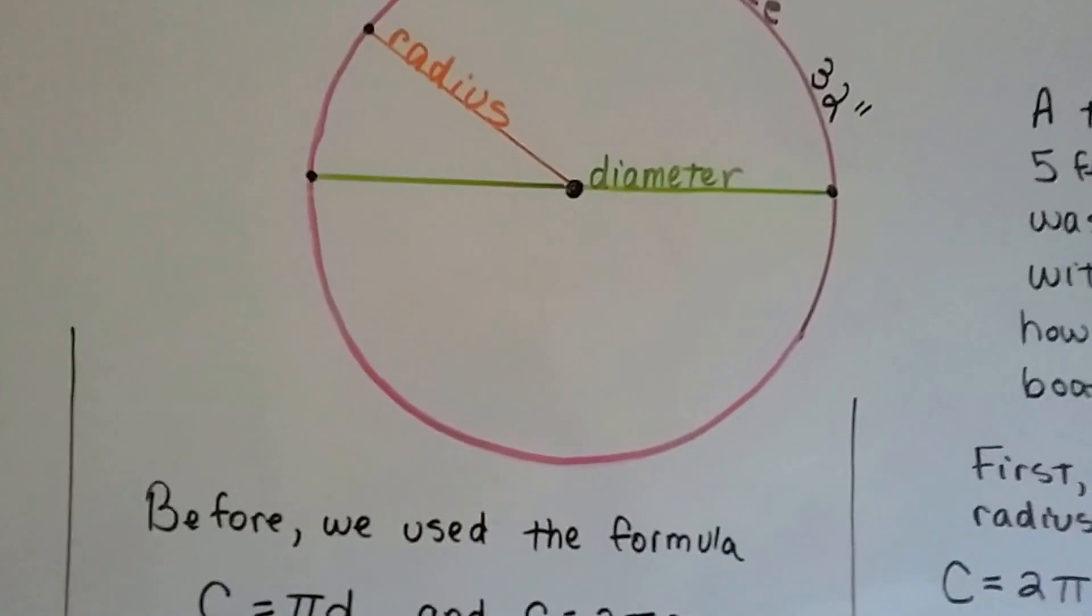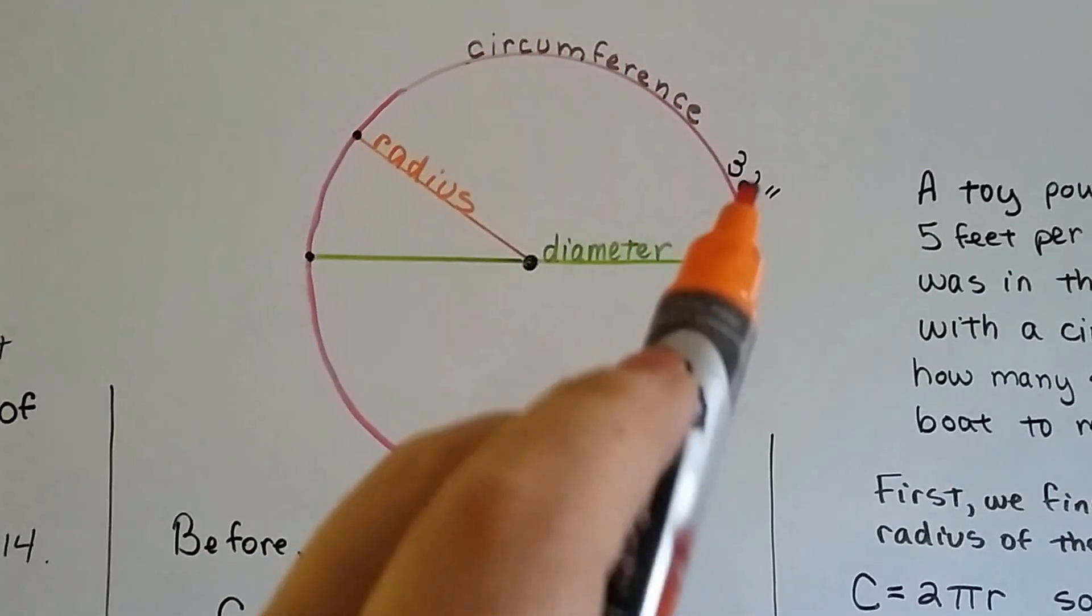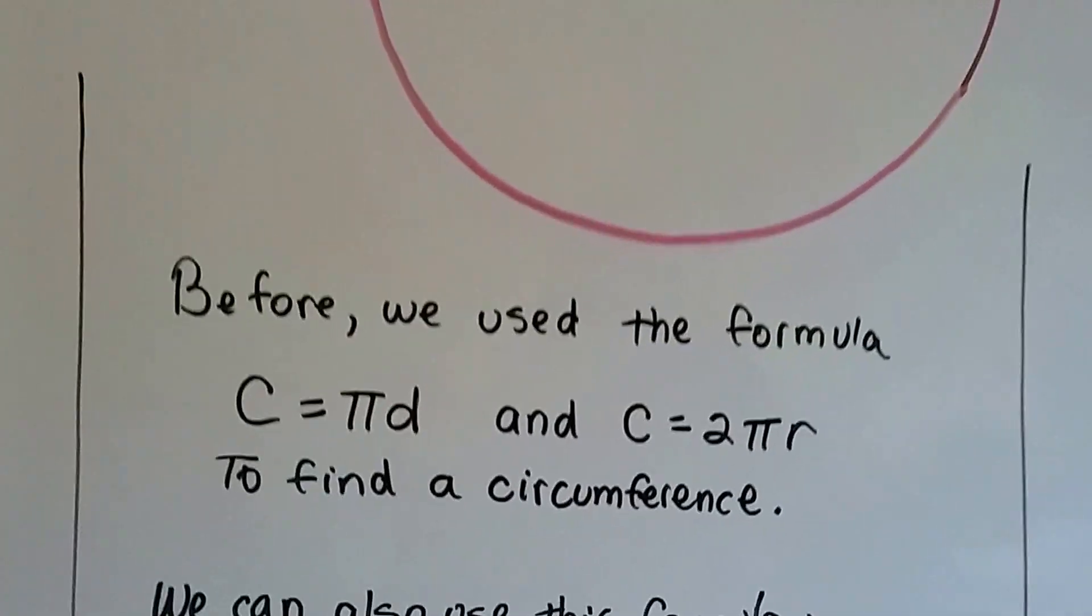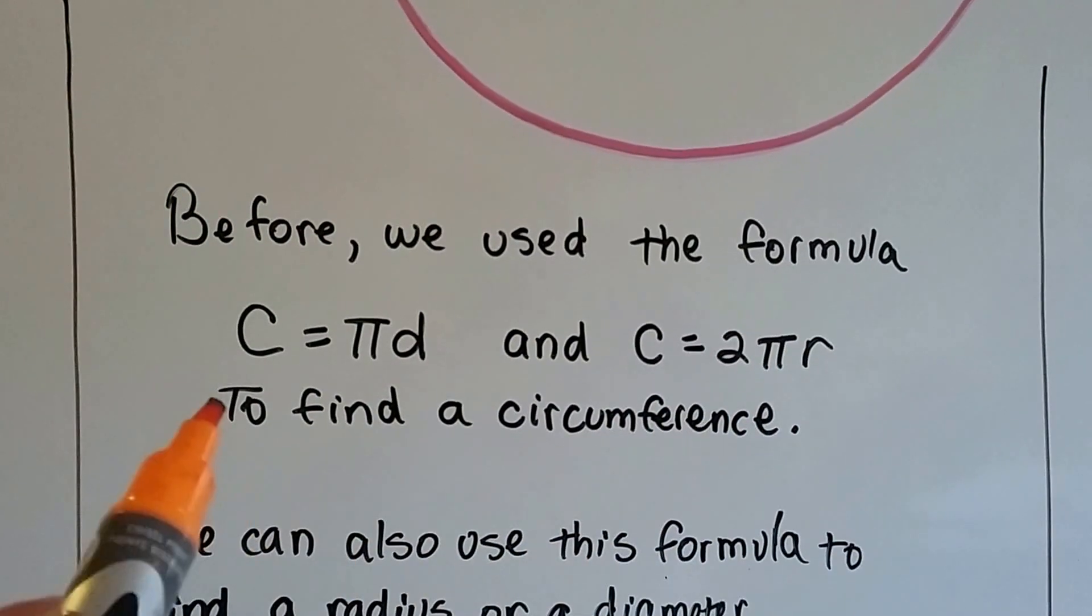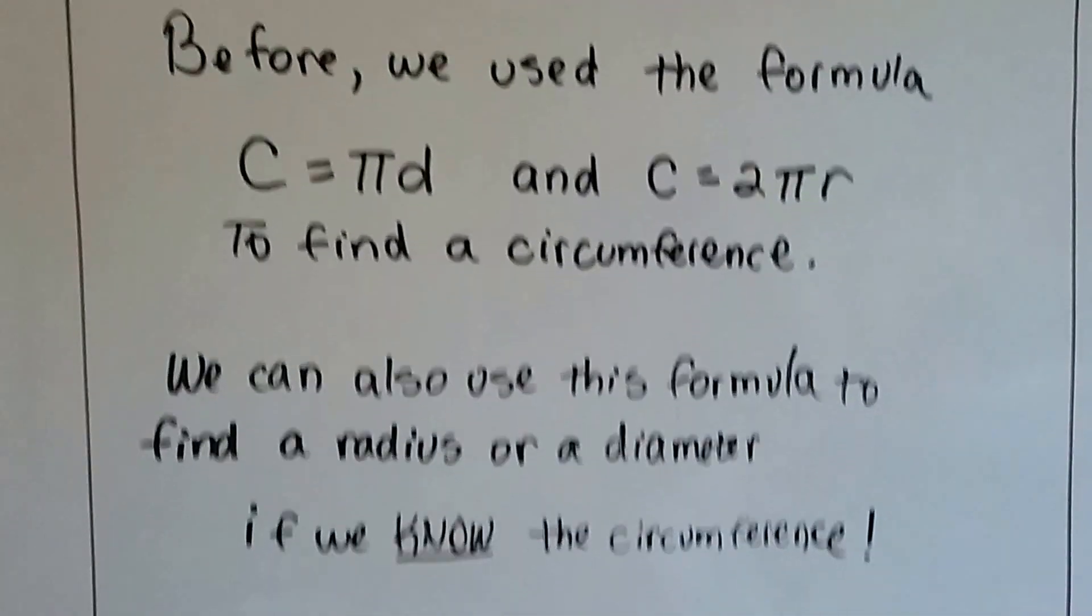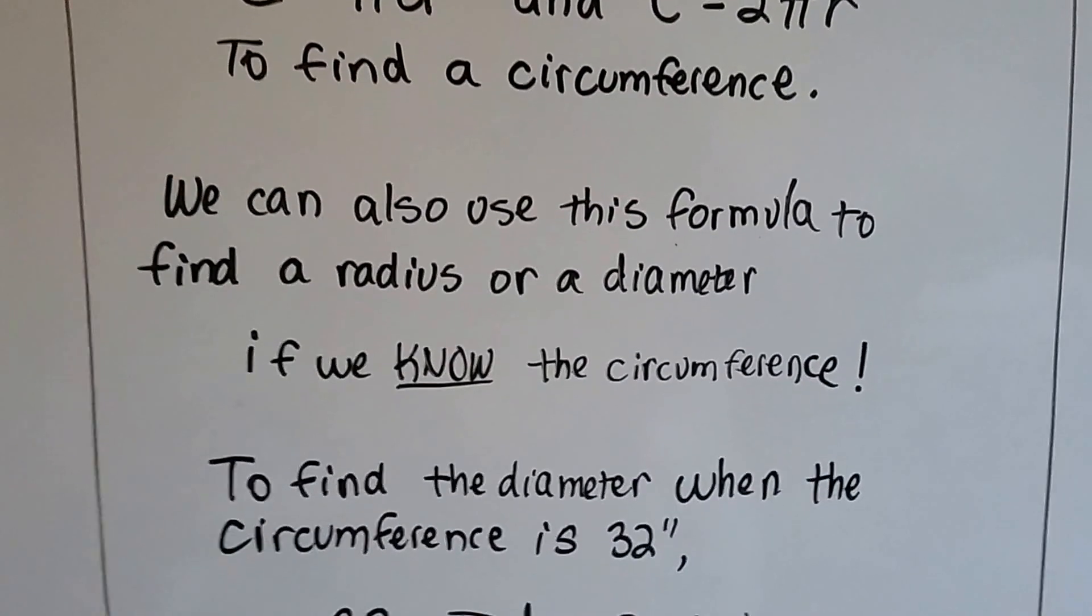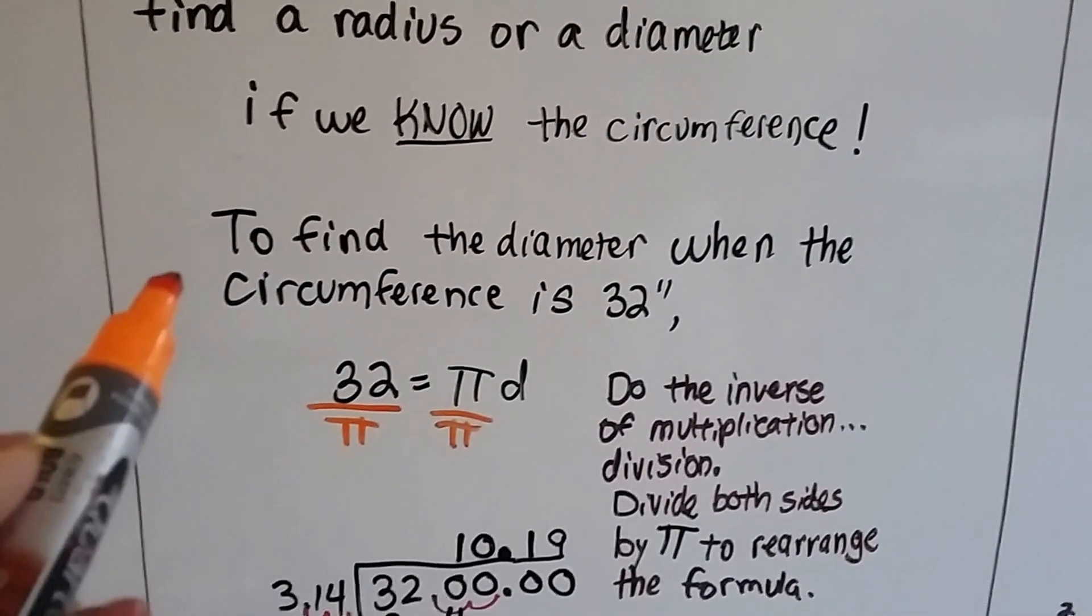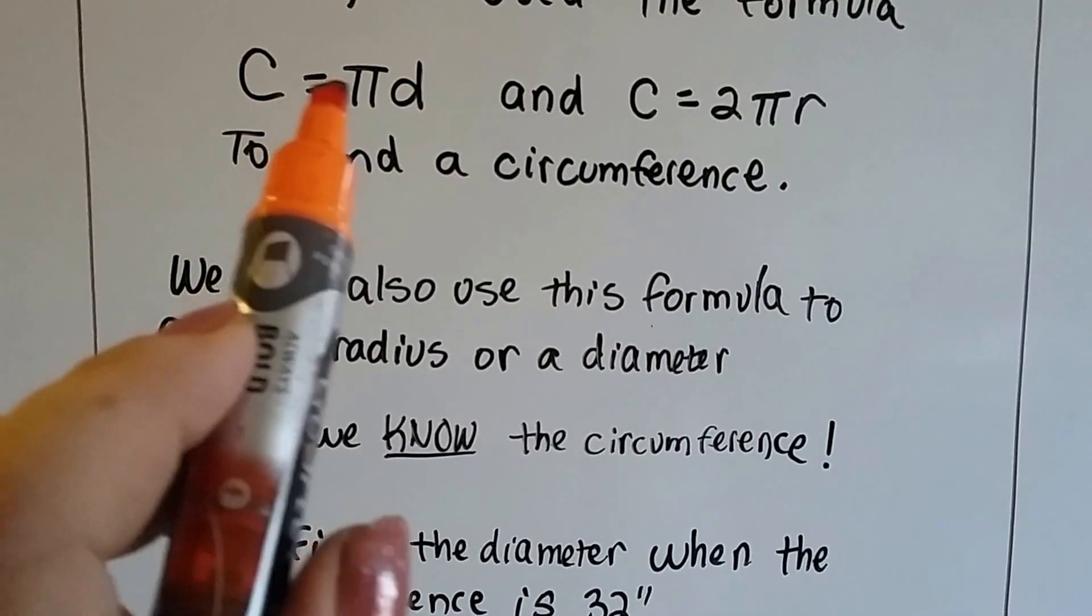Here's our pink circle again. But now, we don't have a diameter or a radius. We only know that the circumference is 32. Before, we used the formula c equals pi d, and c equals 2 pi r, to find the circumference if we knew the diameter or radius. Well, we can also use this formula to find a radius or a diameter. Flip it around if we know the circumference.